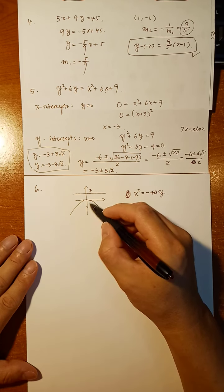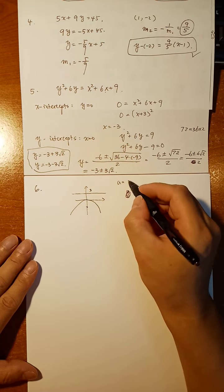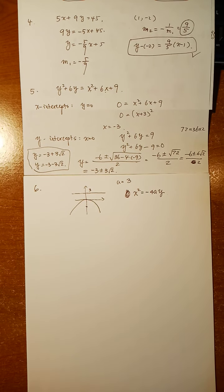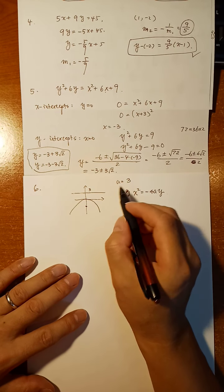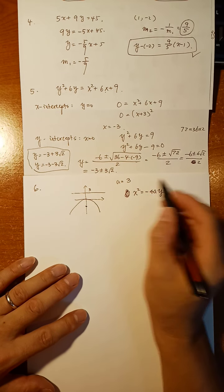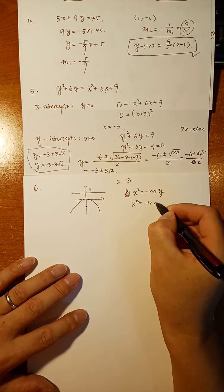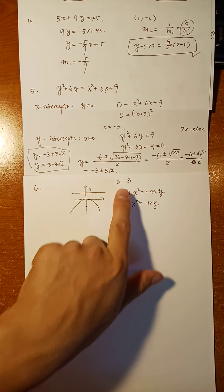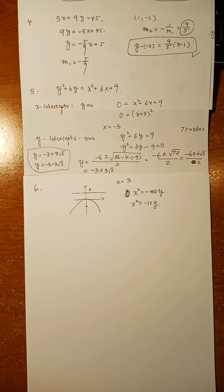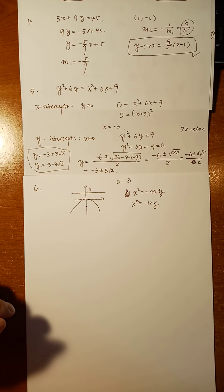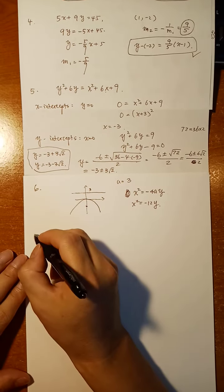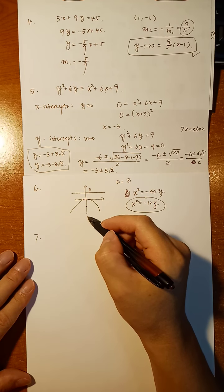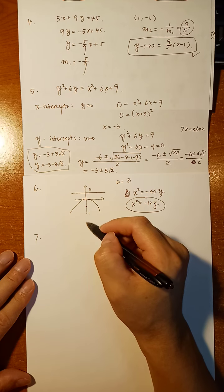So a equals 3, and a is always positive. Check your textbook to confirm. The equation is x squared equals negative 4 times 3 times y, which gives x squared equals negative 12y. If the opening faces the negative y direction, it's negative 4ay. If it faces the negative x direction, it would be negative 4ax.